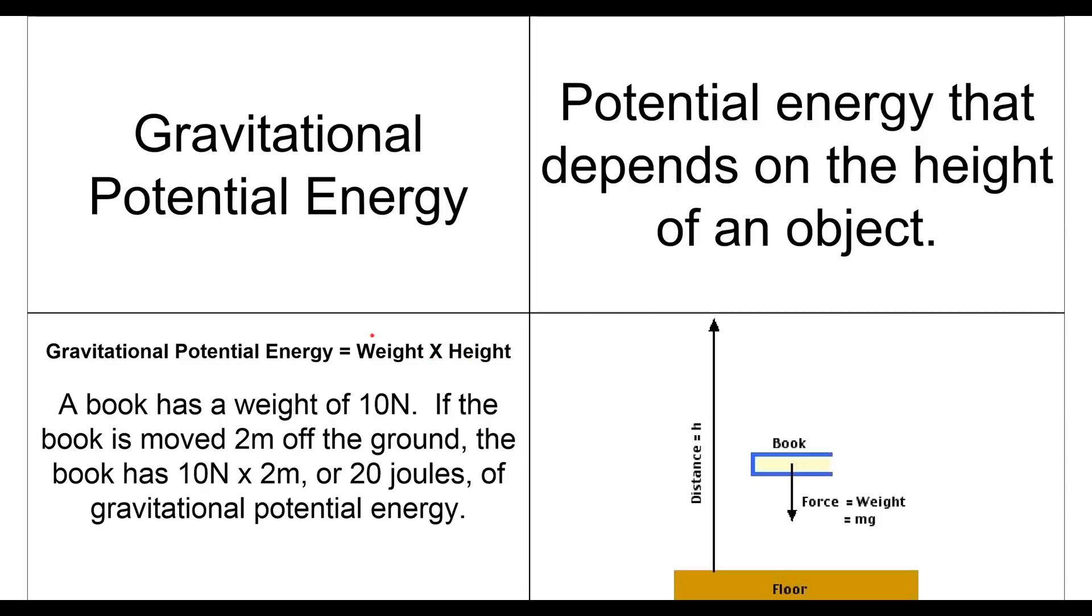So that means our weight, remember, is going to be something in newtons, because that's the unit we use for weight. And our height, then, is going to be meters. Because a newton times a meter is what equals a joule. So, a book has a weight of 10 newtons. If the book is moved 2 meters off the ground, the book has 10 newtons times 2 meters, or 20 joules, of gravitational potential energy.